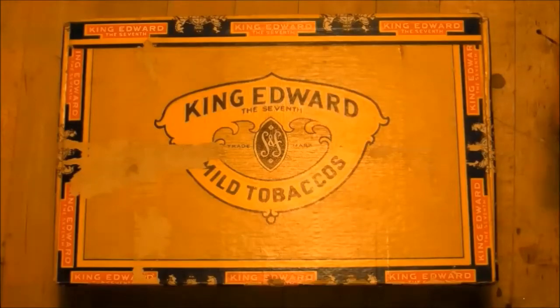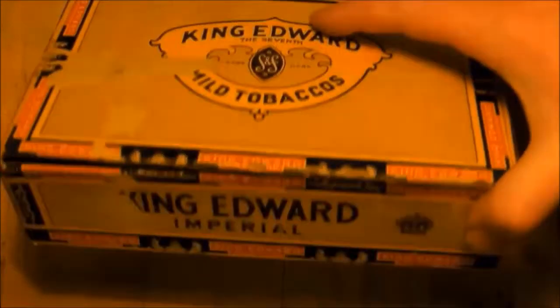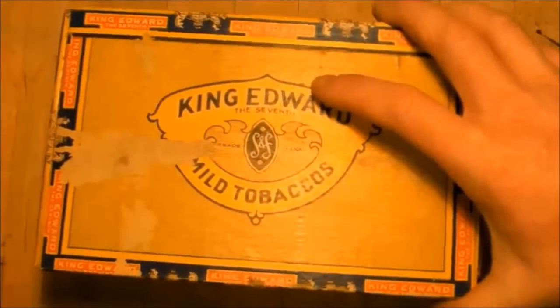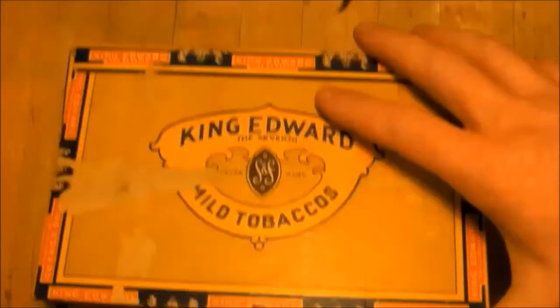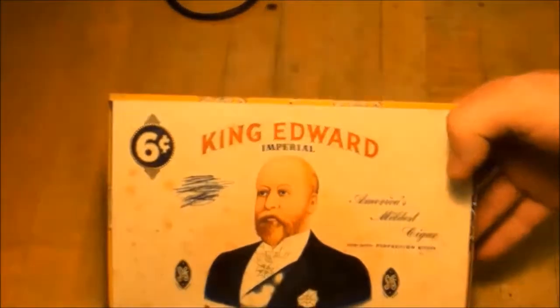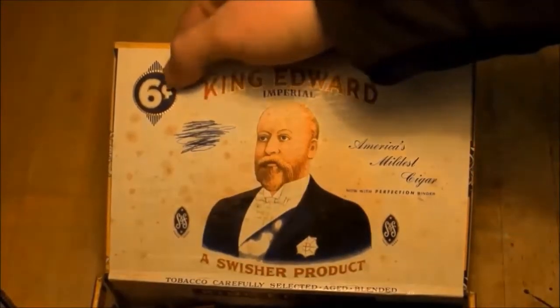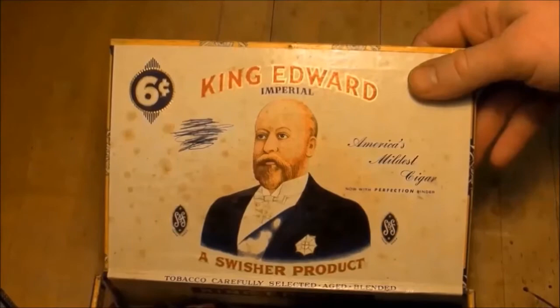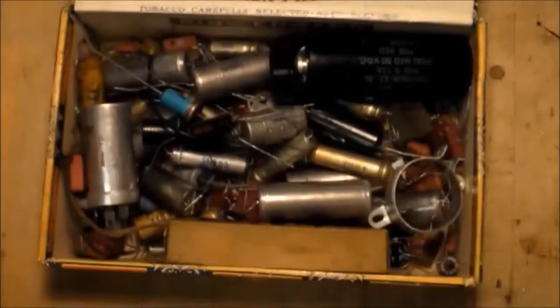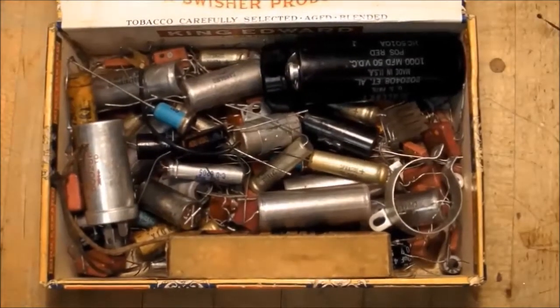Hi everybody. I have recently been given this cigar box. It's a half decent looking cigar box, King Edward Cigars with a nice picture of King Edward himself on there. I assume that's him. Six cents per cigar. But what's really impressive is that it's full of really old capacitors.